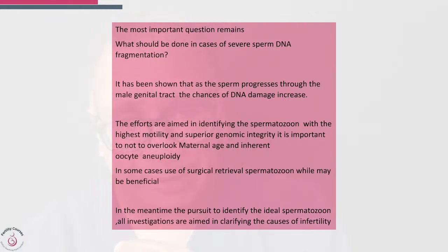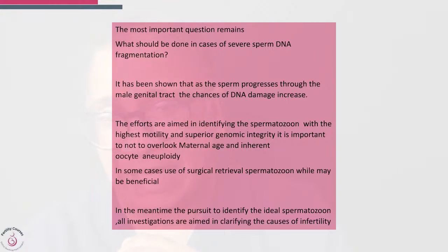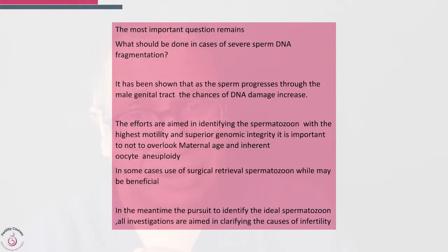There are various different methods available, and which test is used depends on the situation — for example, the TUNEL test in severe oligospermia. There are, in fact, six different tests now available for sperm DNA fragmentation.